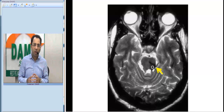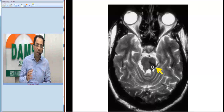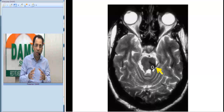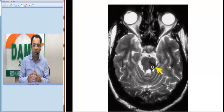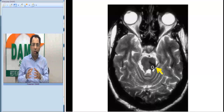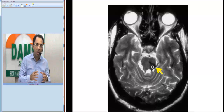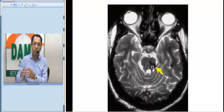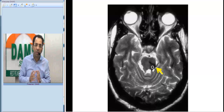For a resident or undergraduate, it is sometimes difficult to understand how blood looks on MRI. Hemorrhage has different appearances on T1 and T2 weighted images depending on the stage. Acute hemorrhage, because of deoxyhemoglobin content, would appear different; subacute hemorrhage would have a different appearance depending on whether it is intracellular or extracellular methemoglobin; and chronic hemorrhage, because of hemosiderin, would have a different appearance.